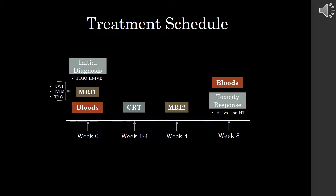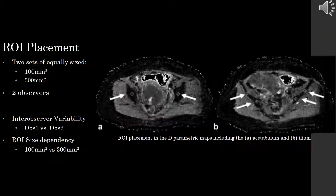We split into two groups: patients suffering HT versus those who did not suffer HT. When analyzing baseline and post-treatment images, two observers each placed two sets of equally-sized regions of interest along the acetabulum and the ilium. The first set of ROIs had an area of 100 mm², while the second had an area of 300 mm², leaving us with four sets of ROIs. Thus, in addition to evaluating for hematological toxicity, we were also able to evaluate the reliability of our measurements, including inter-observer variability and the size dependency of ROIs.